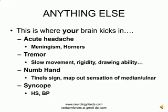Or in someone with tremor, you might want to specifically try and elicit extrapyramidal signs, like the slowing of movement, rigidity, or their ability to copy a diagram. In someone with a numb hand, where carpal tunnel would be a common cause, you might want to map out sensation at the junction of the median and ulnar sensory territories in the ring finger. Or a person who's fainted or had syncope, you're going to listen to the heart sounds or check blood pressure lying or standing. There are many scenarios where you can use the Forbes Quick Neurological Examination as a core examination and then go on and do a more targeted exam.